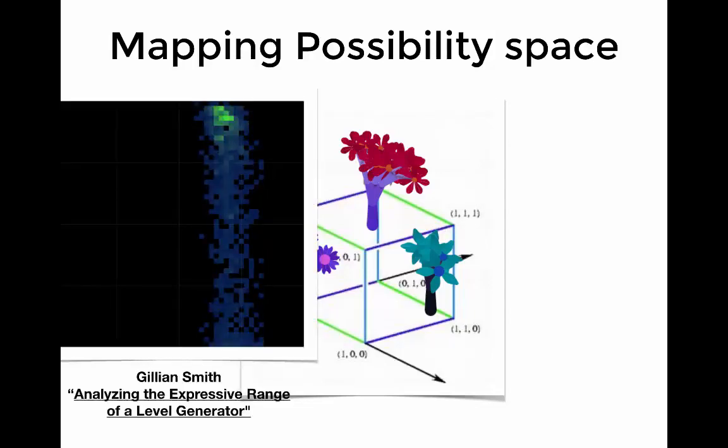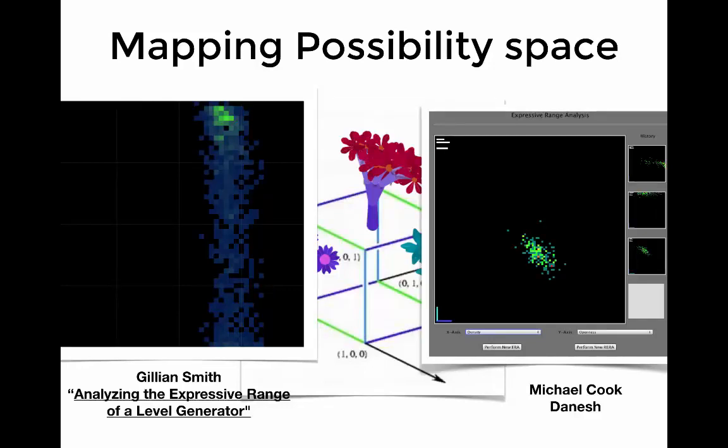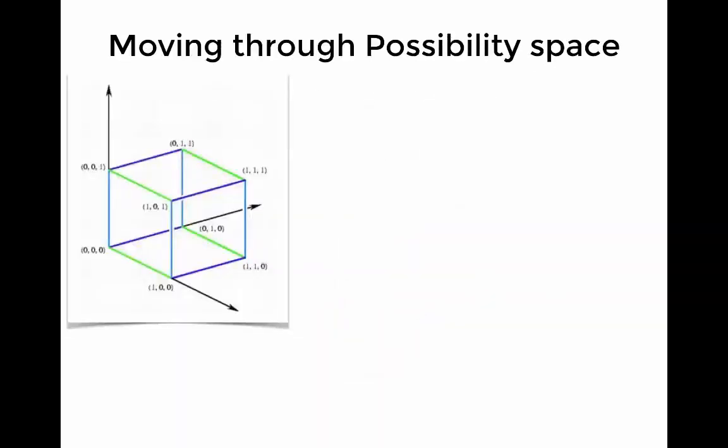There are a couple of projects currently existing, Gillian Smith's Analyzing the Expressive Range of a Level Generator, and Michael Cook's Dinesh, which try to take this multi-dimensional cube and compress it at least into two dimensions that you can look at on screen. As I mentioned before, though, there are a number of neat tricks that you can pull in 32-dimensional space.